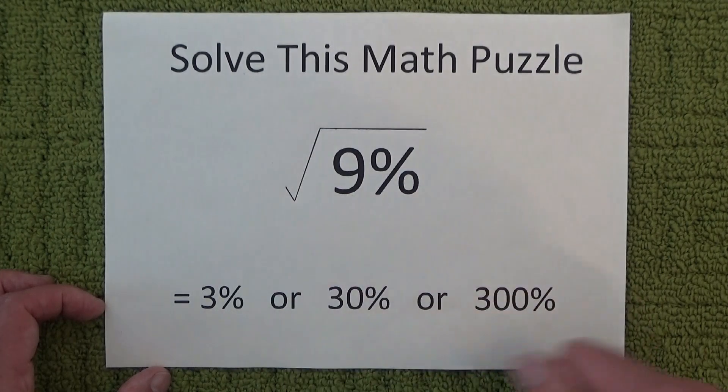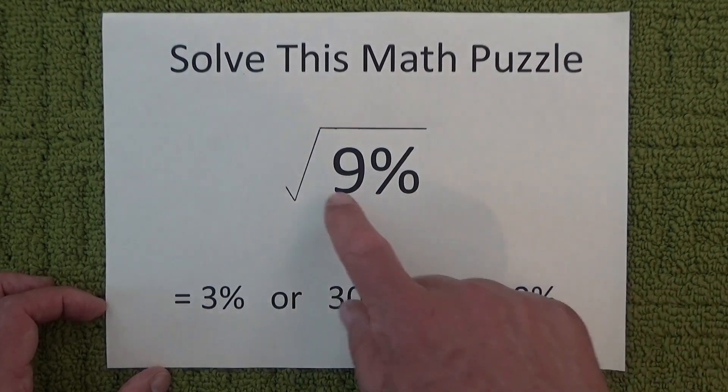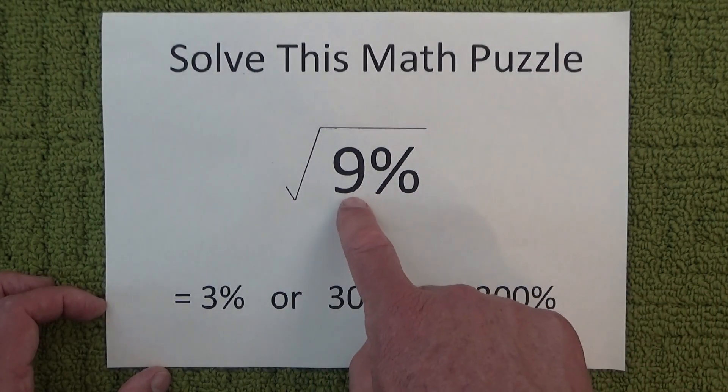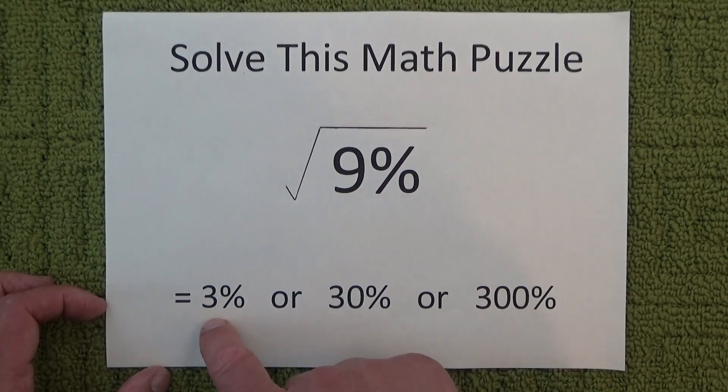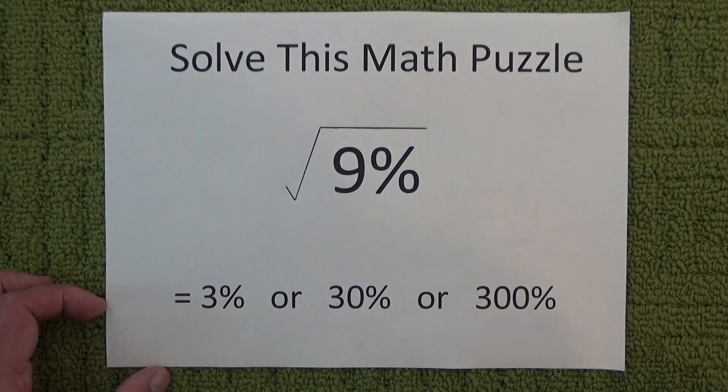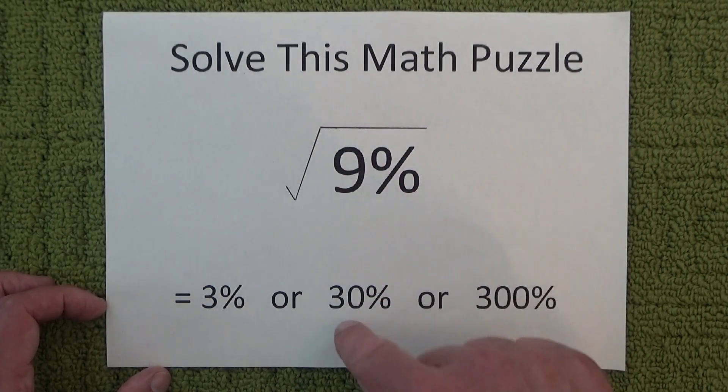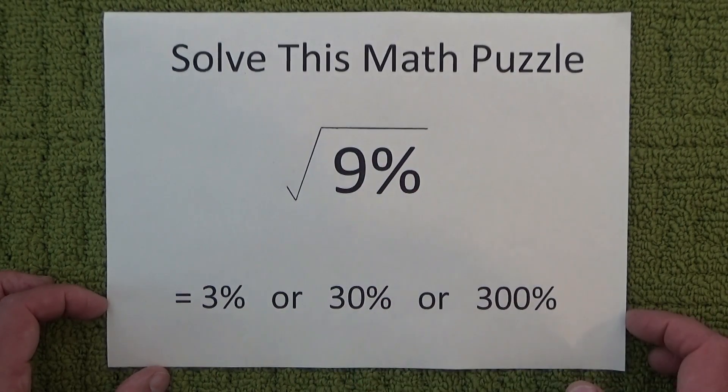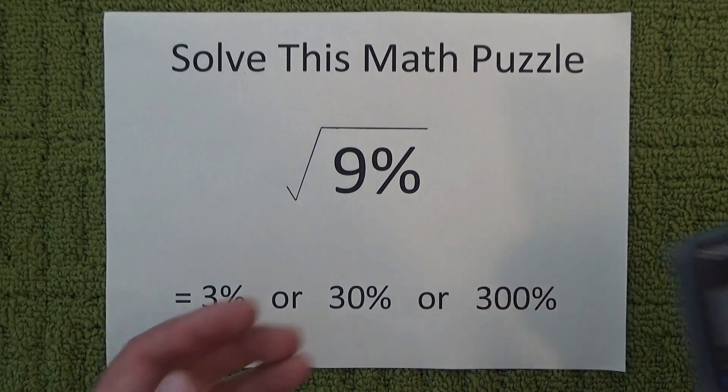This is a great puzzle because the most obvious answer is not correct. So you would automatically think that the square root of 9%, just doing it in your head, is 3%, but actually the square root of 9% is actually 30%.